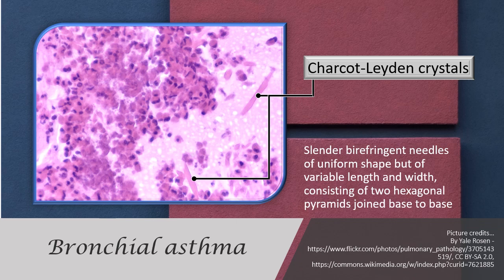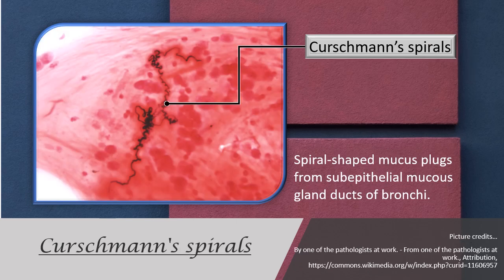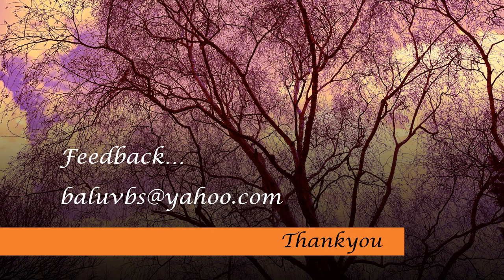Additional identifying features in asthma include: birefringent crystals — slender needles of uniform shape but variable length and width, consisting of two hexagonal pyramids joined base to base — known as Charcot-Leyden crystals. Also, spiral-shaped mucus plugs visible in the lumen, derived from subepithelial mucus glands, are important identifying features in a bronchial asthma case — called Curschmann's spirals.